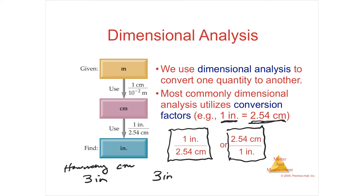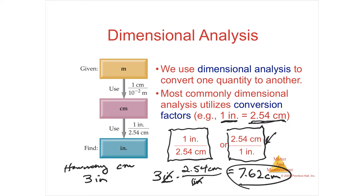If you take 10 divided by 10, you get 1. Similarly, 12 inches divided by 1 foot still equals 1, because they're equal. Multiplying by 1 doesn't change the value — all you're doing is canceling units. Since we have inches and want to get rid of them, we put inches on the bottom of the fraction. In one inch there are 2.54 centimeters. Inches cancel, and 3 times 2.54 equals 7.62 centimeters. That's how you do dimensional analysis.